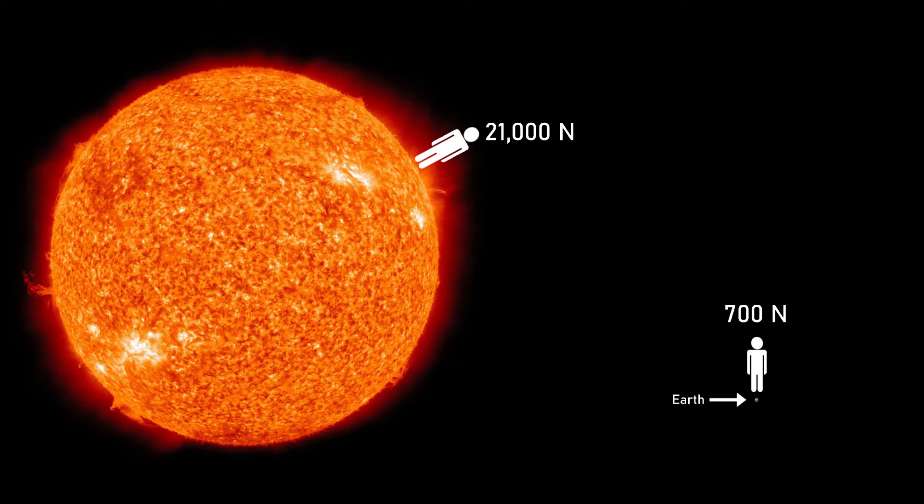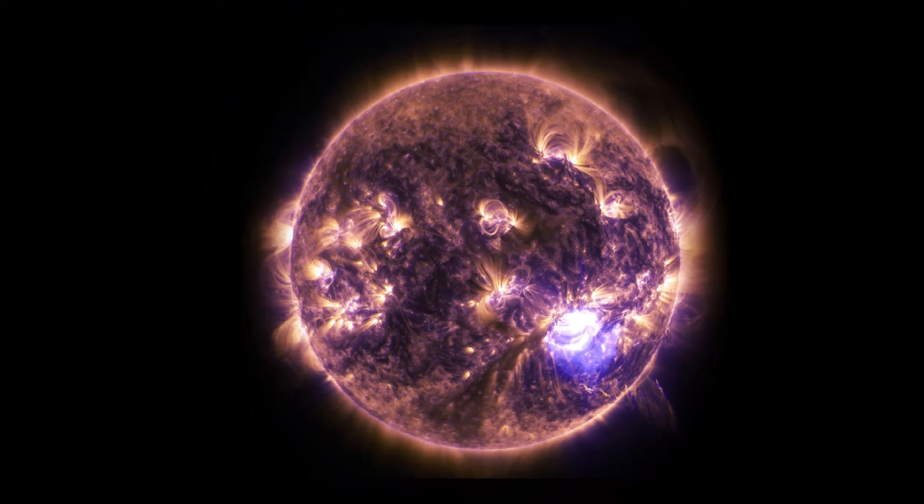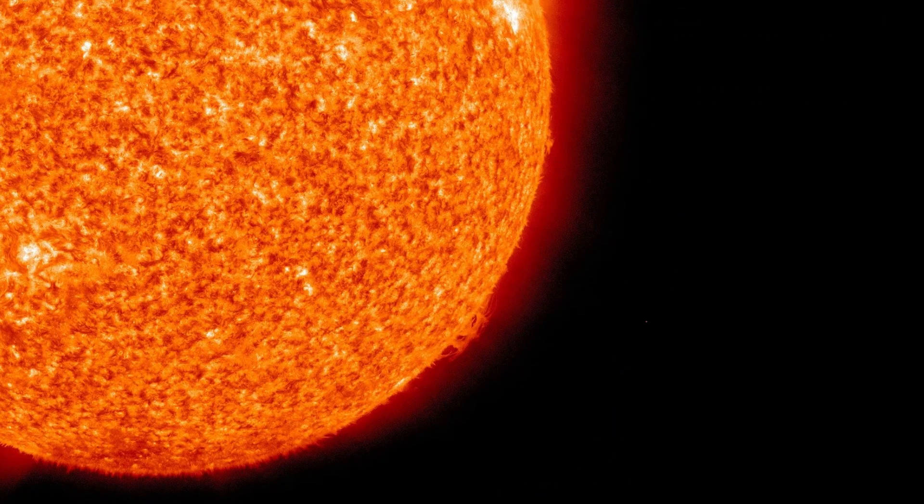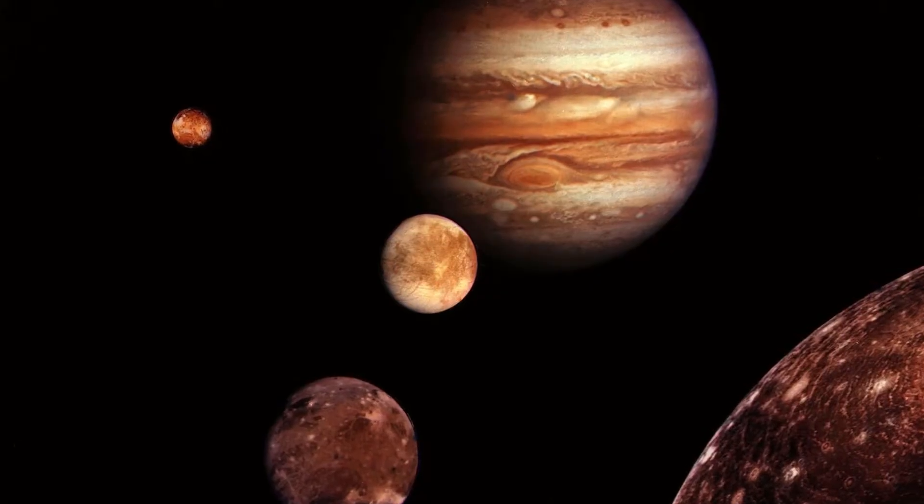But the most curious thing of all is that our sun isn't a big star in the grand scheme of things. UY Scuti is one of the largest known stars at 1700 times the radius of the sun, large enough that the outermost part of the star, the photosphere, would contain the orbit of Jupiter if it was placed where the sun is.